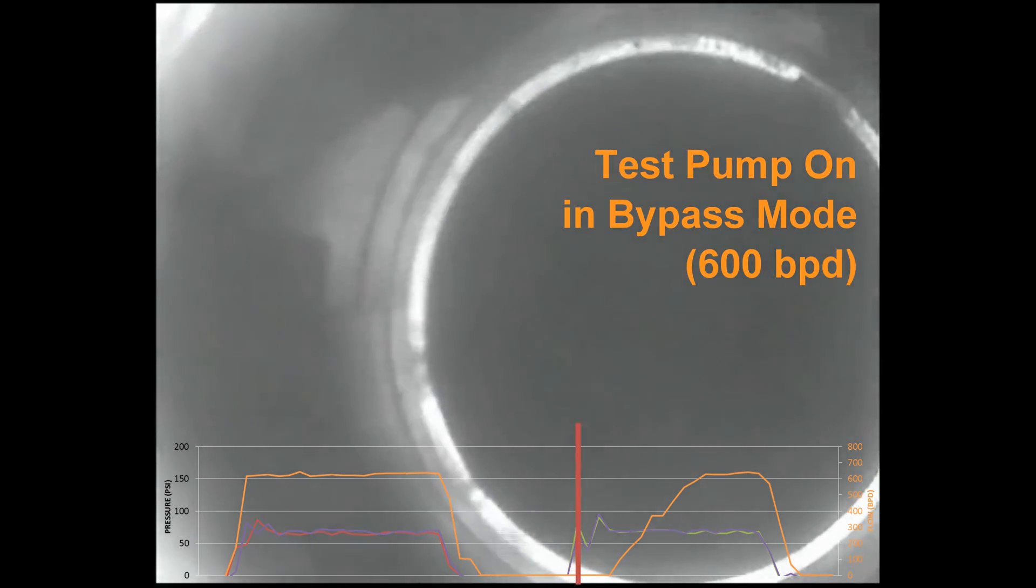The test pump is once again engaged, simulating flow coming up through the bypass leg. The ball moves over to the ESP leg, preventing flow circulating back through the pump.